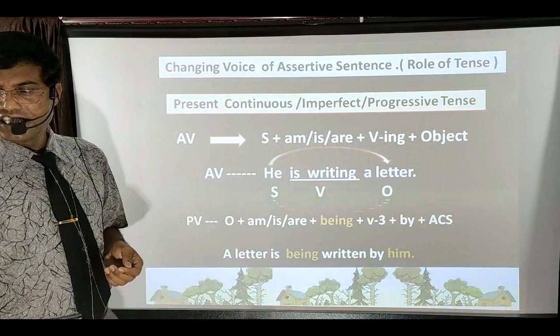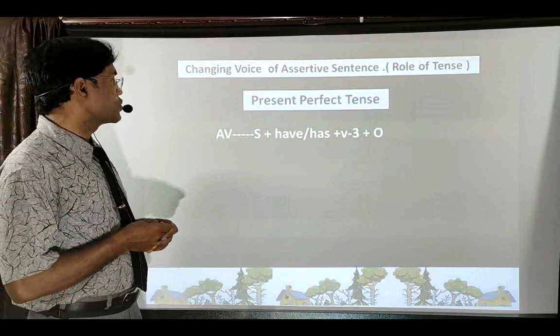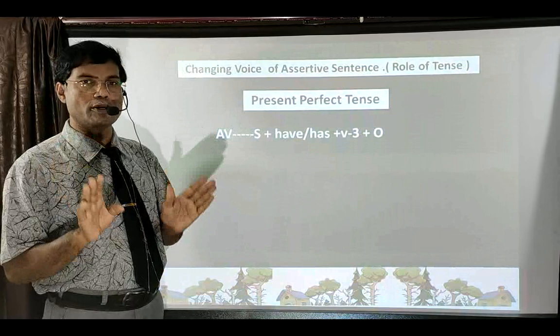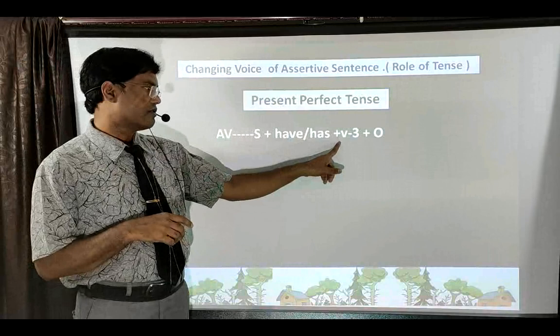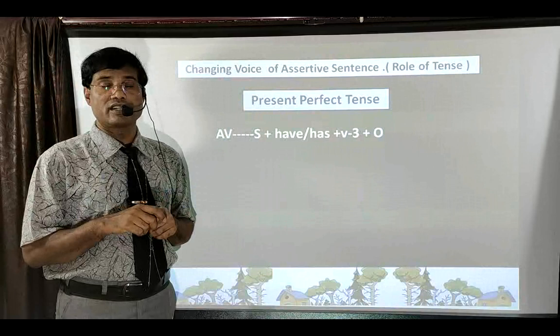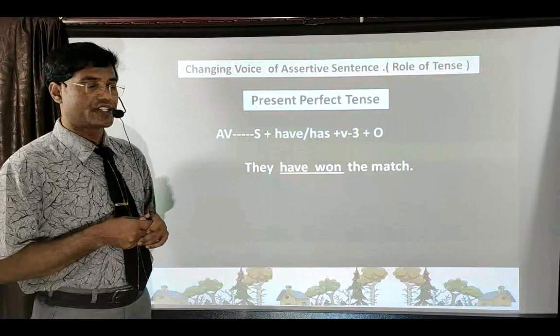Let us move to Present Perfect Tense. In Present Perfect Tense, some things are added and the formula changes slightly. Active voice formula: Subject + have/has (use 'has' for third person singular noun/pronoun, 'have' for others) + third form of verb + Object. One convenience in this tense: the third form of verb is already available, no need to find it separately.